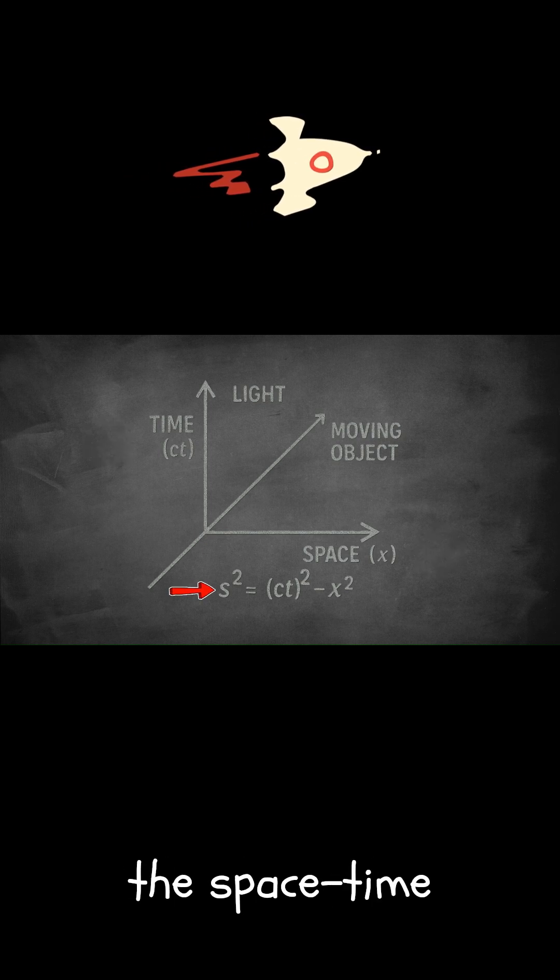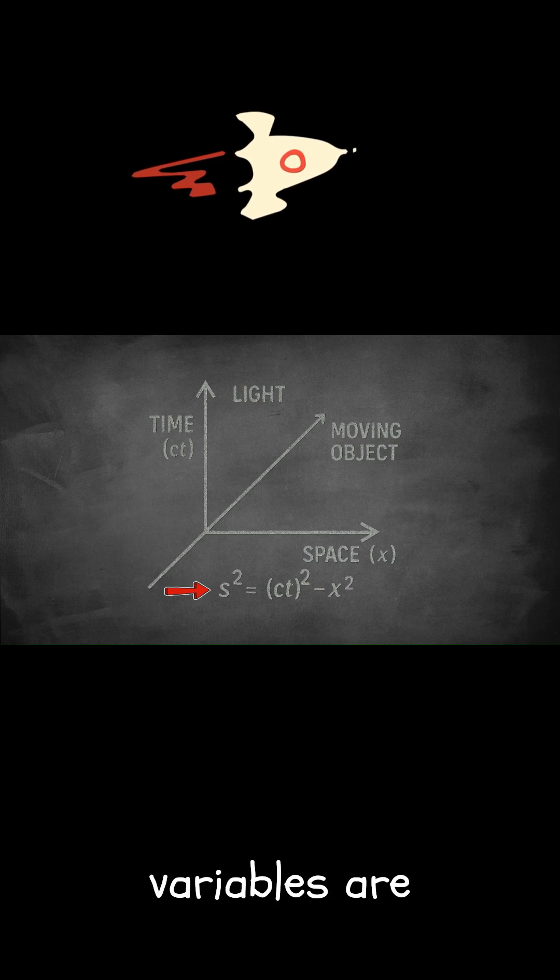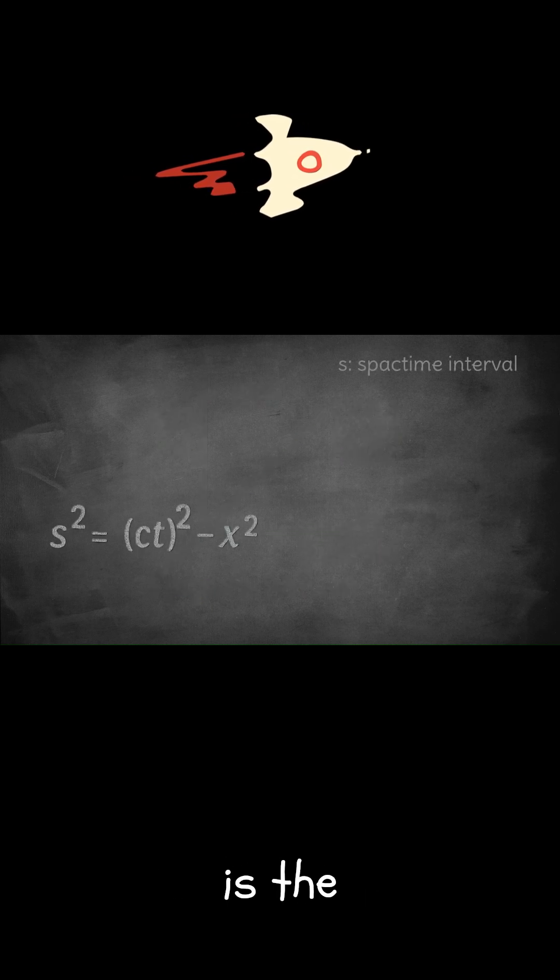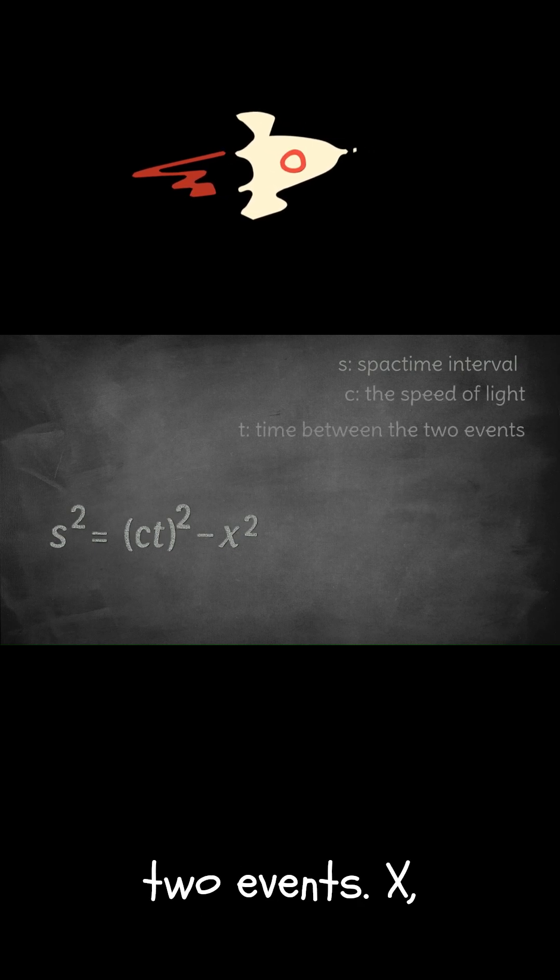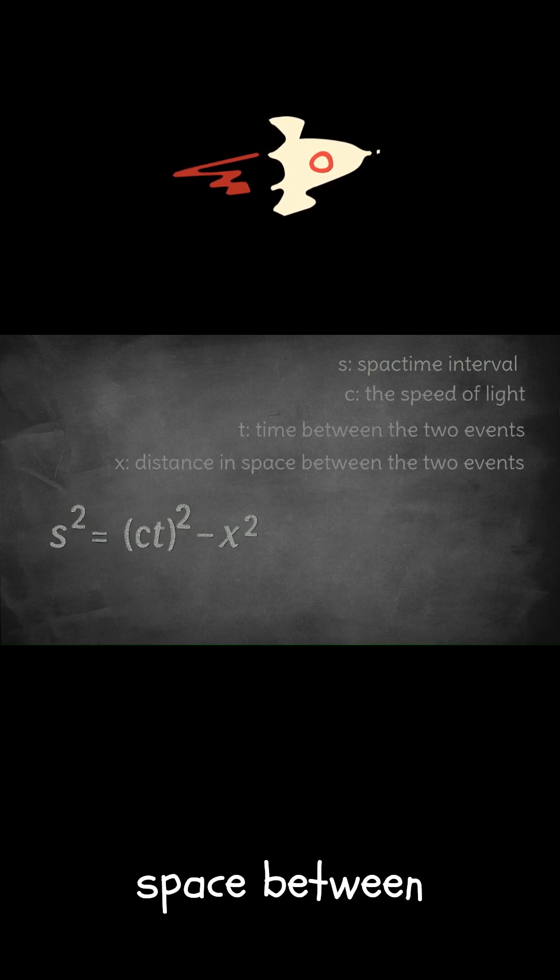At the bottom, we see the space-time interval equation. The variables are as follows: S is the space-time interval, C the speed of light, T time between the two events, X distance in space between the two events.